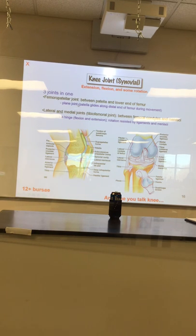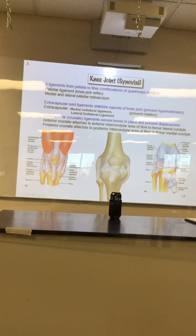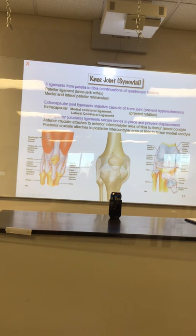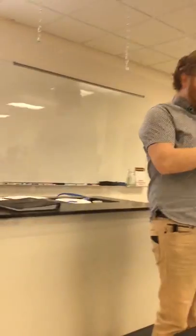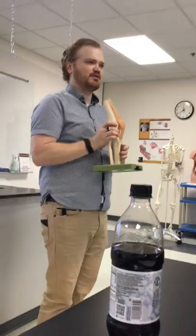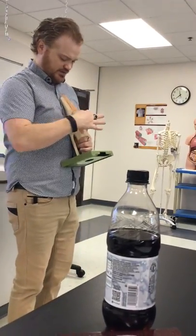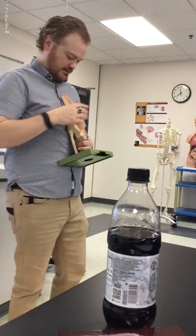Here's a right leg, and on this right leg there are four major ligaments to describe. Let's do the easy one in the front first. What is the patella? What kind of bone is the patella?